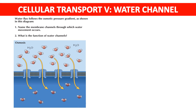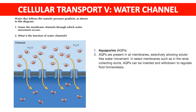Water channels: water flux follows osmotic pressure gradients as shown in the diagram. The membrane channel through which water movement occurs is aquaporin (AQP). AQPs are present in all membranes, selectively allowing solute-free water movement. In select membranes such as the renal collecting duct, AQPs can be inserted and withdrawn to regulate fluid homeostasis.